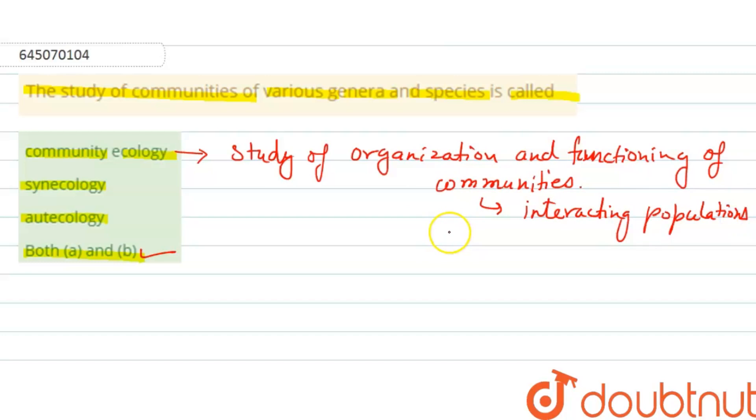Of the species, different various genera and species, right, so that is correct here. Next option, that is synecology. So synecology, that is the branch of ecology, right, that concerned with the group of organisms.